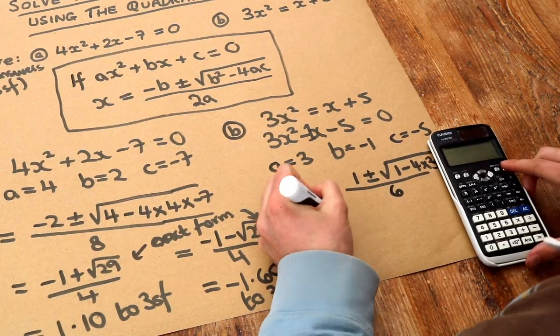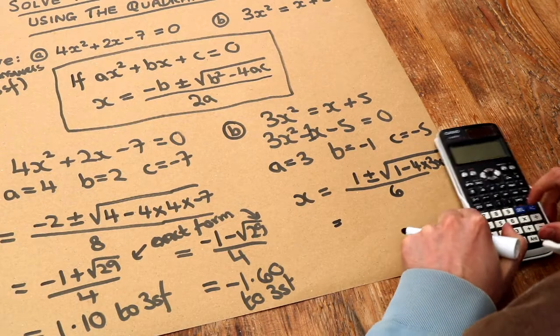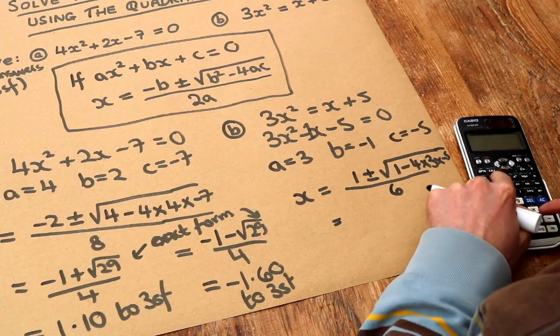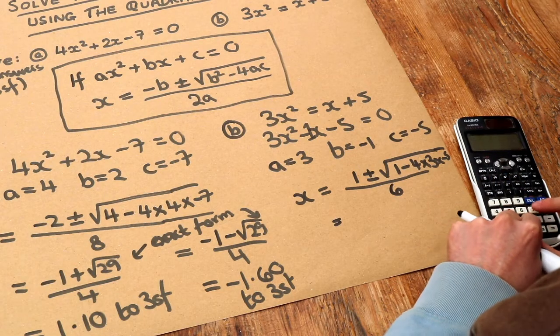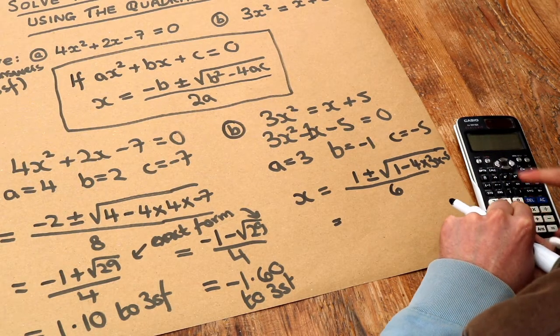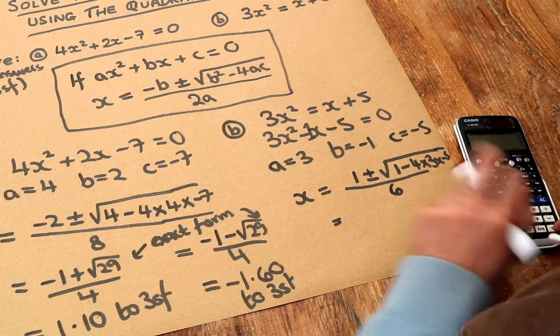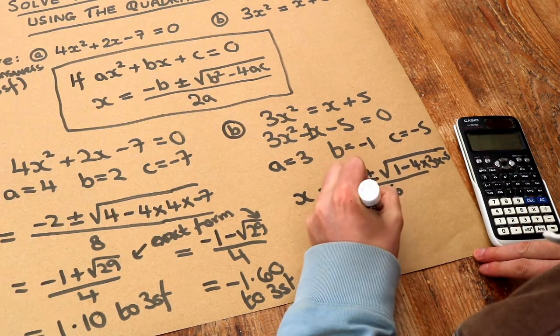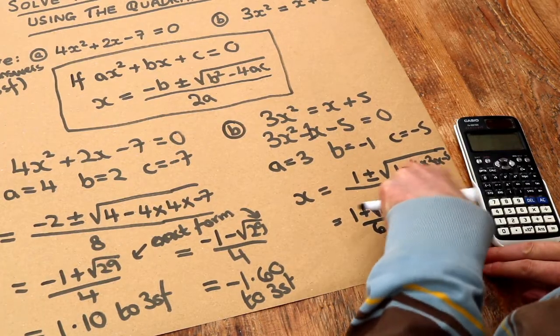And again I'm going to just put that on my calculator. So fraction button 1, I'm going to do plus first for the plus or minus. Square root of 1 minus 4 times 3 times minus 5, all over 6. And that gives me 1 plus root 61 over 6. So it's just simplified this bit here for me.